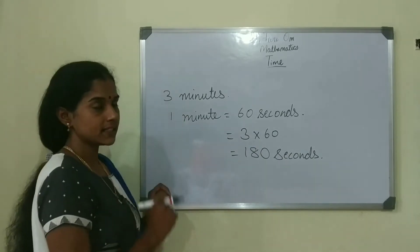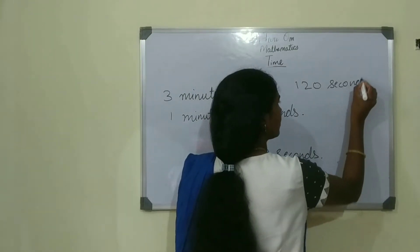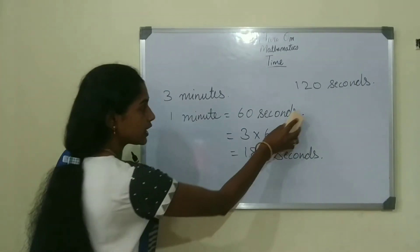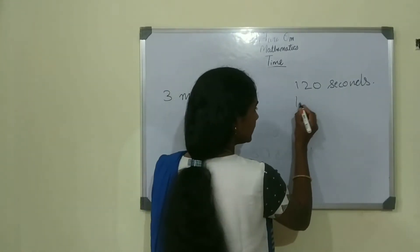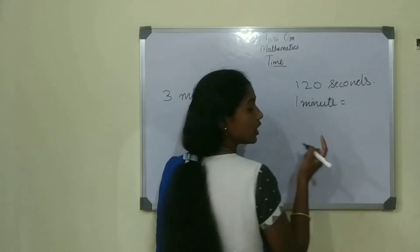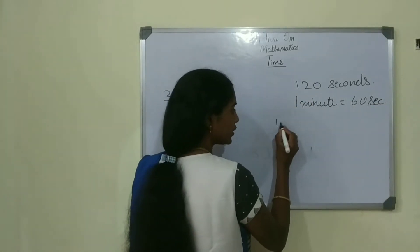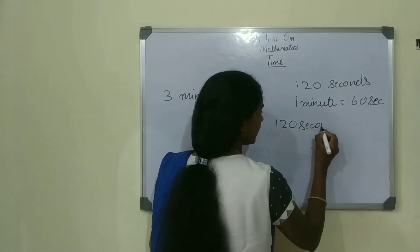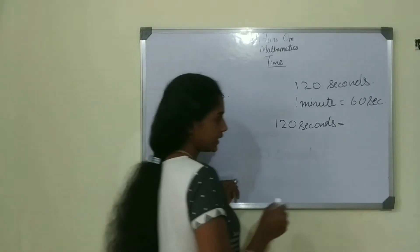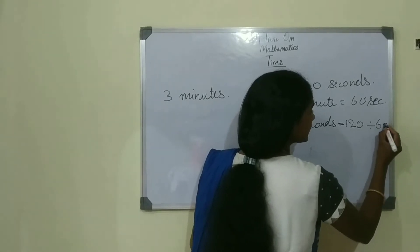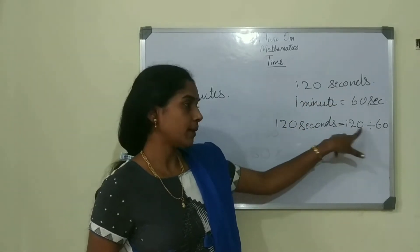And how to convert seconds into minutes? If it is 120 seconds, how to convert 120 seconds into minutes? We already learned 1 minute is equal to 60 seconds. So if it is 120 seconds, we are going to divide 120 by 60. For converting seconds to minutes, we are going to divide the number by 60.